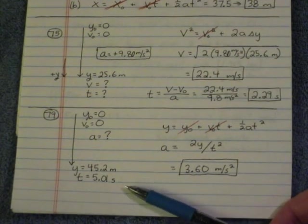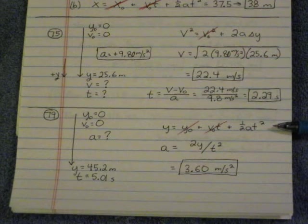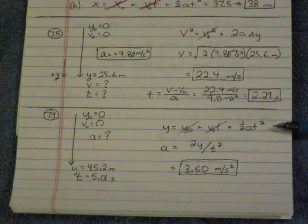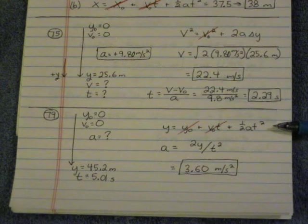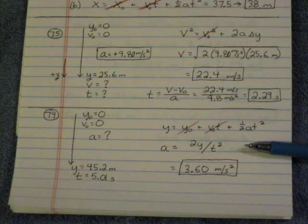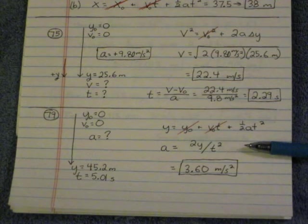So when we know those pieces of information, we want to know acceleration. Here's a good equation right here. Y equals, Y naught is zero, V naught T is zero, and we're left with 1 half AT squared. So when we solve that for acceleration, we get 2Y over T squared. You plug in those numbers and you get 3.60 meters per second squared.